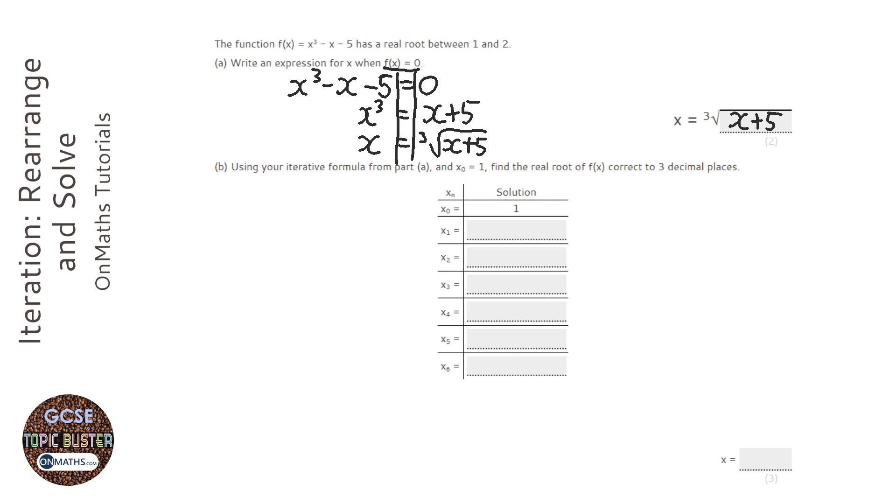Now with the iteration formula, it's a beautifully simple idea that this formula will, as soon as we keep plugging in what we've found for the answer before, get us closer and closer to the real root. Sometimes the roots are infinite, so we could be sitting there all day getting closer and closer. This is why the question will say three decimal places or four decimal places - that tells us when to stop.